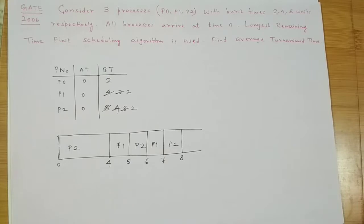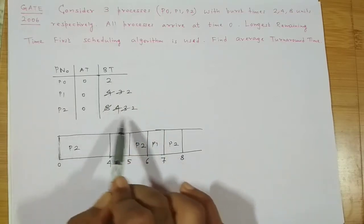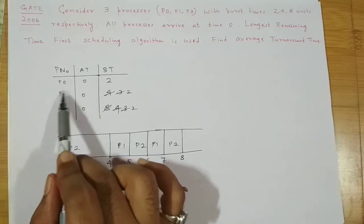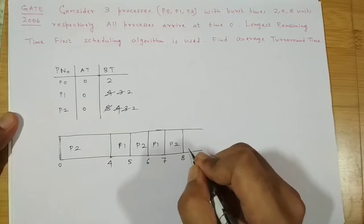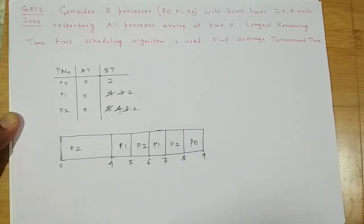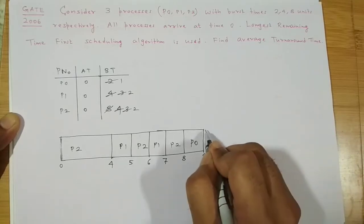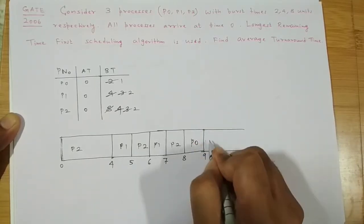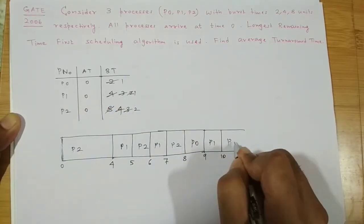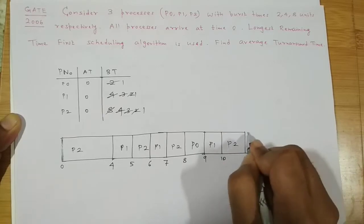Now P0, P1, and P2 all have the same remaining burst time. We look at arrival time — it's the same for all. So we look at process number: P0 will be scheduled because its ID is lower than the others. P0 runs for one unit of time. Then P1 and P2 compete again — P1 gets the CPU, its burst reduces by one, then P2 gets it, and P0 comes back in again.